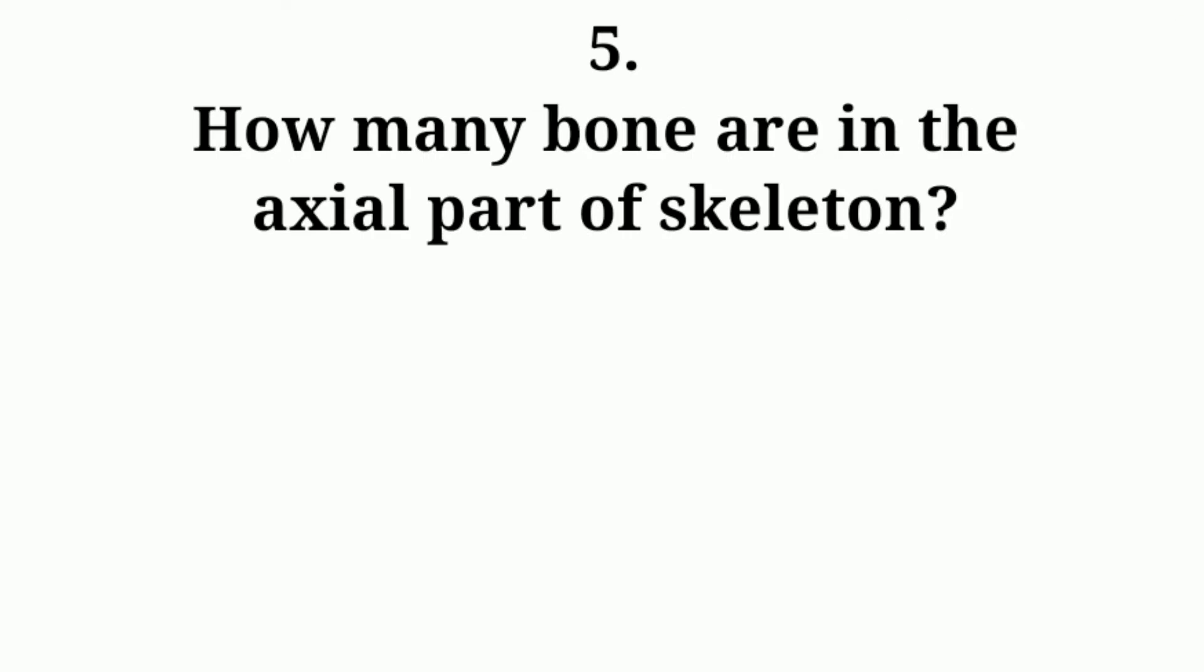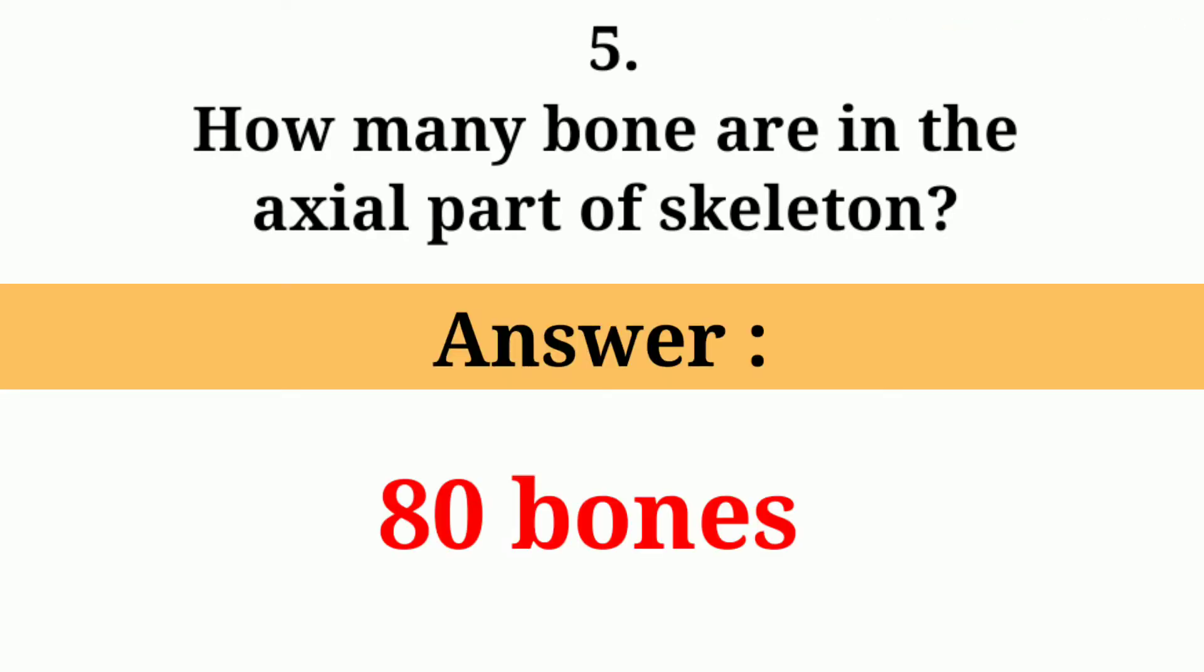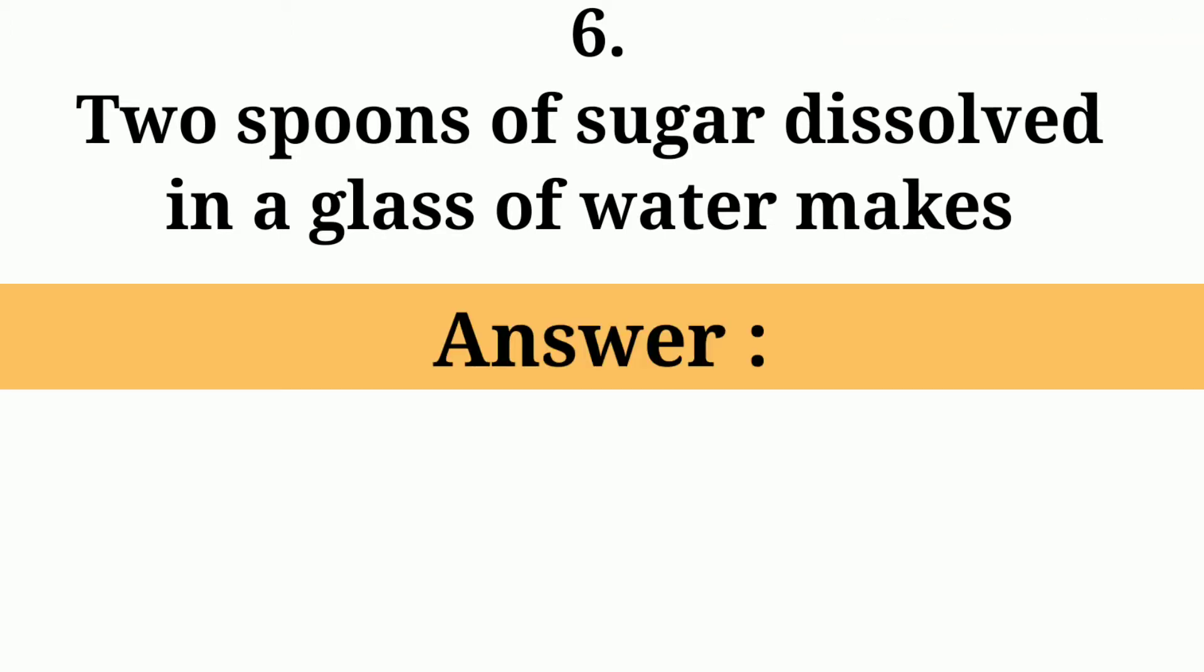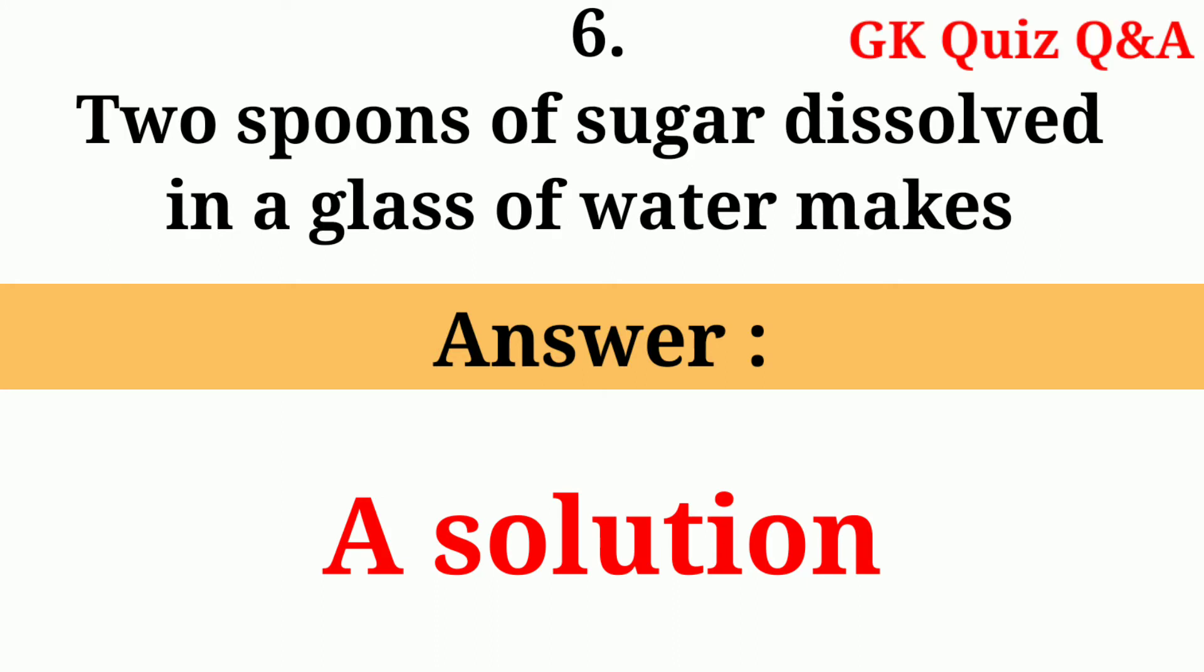How many bones are in the axial part of the skeleton? Answer: 80 bones. Two spoons of sugar dissolved in a glass of water makes? Answer: A solution.